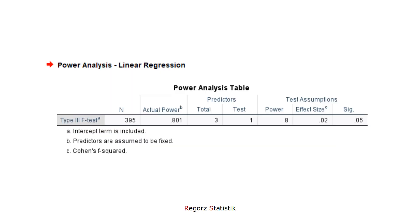We can run this, and this is the result. We need a sample size of 395. This is exactly the same result you would get with G*Power with the same parameters.